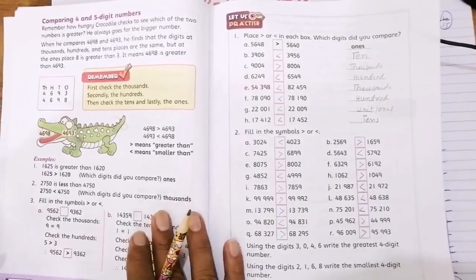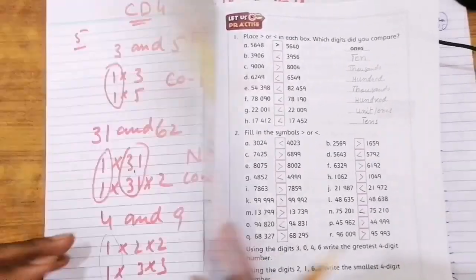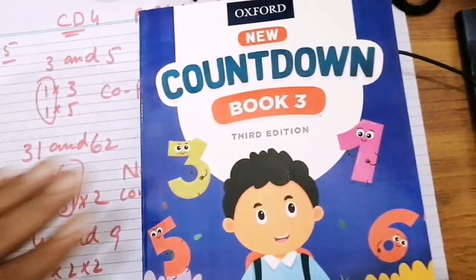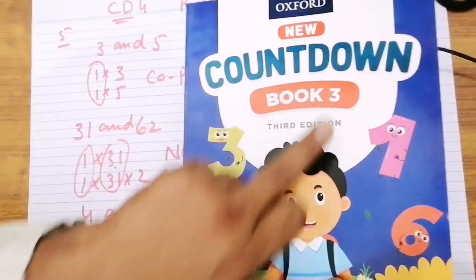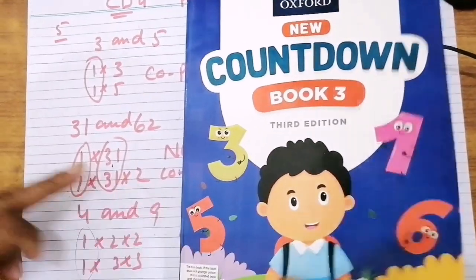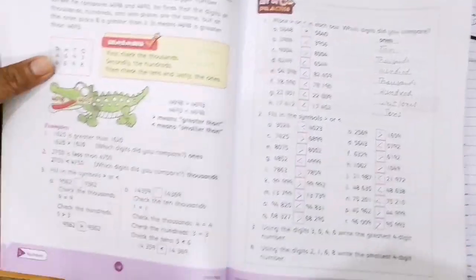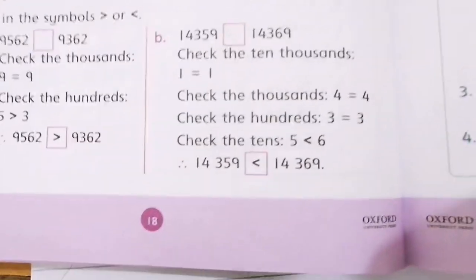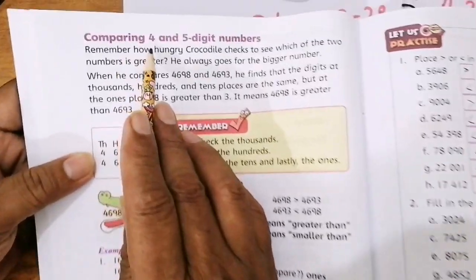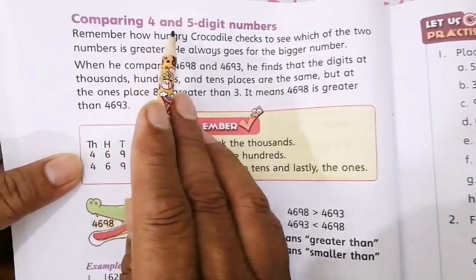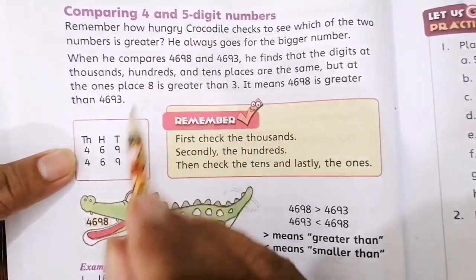Hi students, Assalamualaikum. I am your Maths teacher. Today we will study from Countdown Book 3, page number 18. We will see the comparing of 4 and 5 digit numbers.